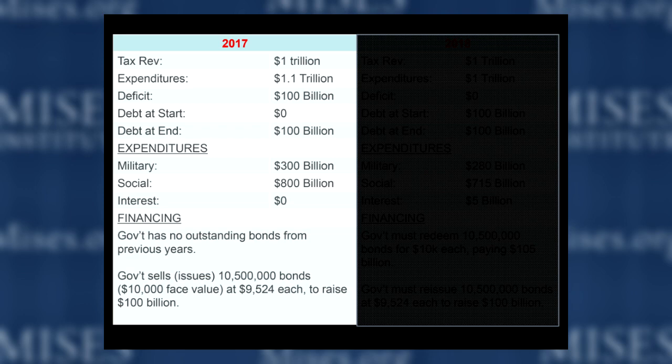Suppose at the start of 2017, the debt of this government was zero dollars — it started out debt free. That means at the end of the year, its debt would now be one hundred billion. That's the relationship between government debt and the deficit. The debt is a stock variable — just a number true at a snapshot in time — whereas the deficit is a flow over a certain unit of time.